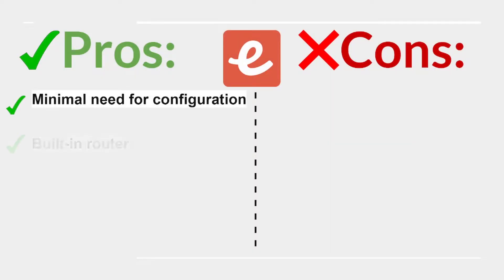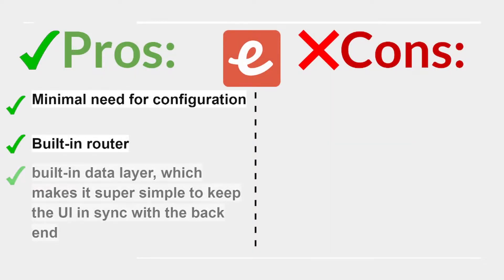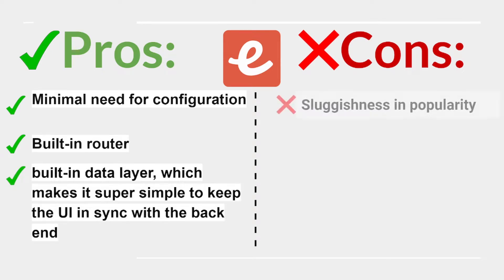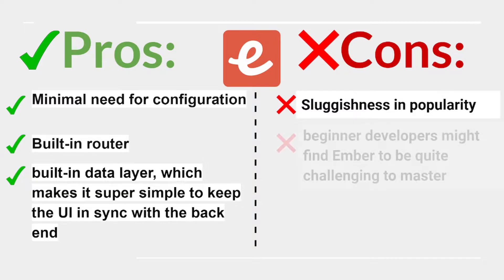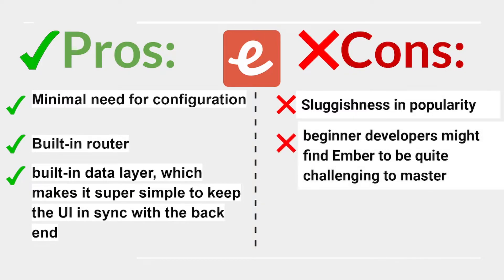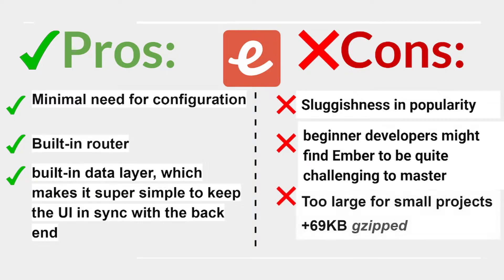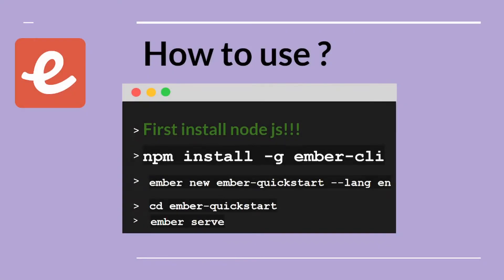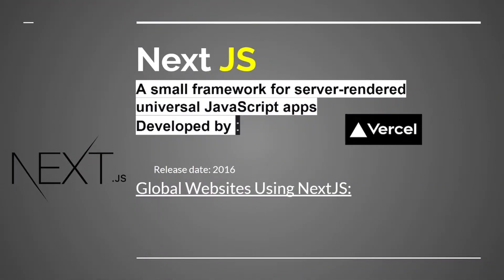Ember.js pros: minimal need for configuration, built-in router, and a built-in data layer that makes it simple to keep the UI in sync with the backend. Cons: sluggishness, declining popularity, beginner developers may find Ember challenging to master, and it's too large for small projects — over 69 kilobytes. Install Node.js and run the appropriate commands to use it.